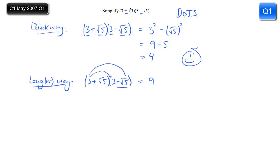3 times root 5, and remember it's minus root 5. So that gives you minus 3 root 5 for that term. Then you've got root 5 times 3, which is plus 3 root 5. And hopefully you can see that those two are going to cancel. And then finally root 5 times minus root 5 is minus root 5 squared.